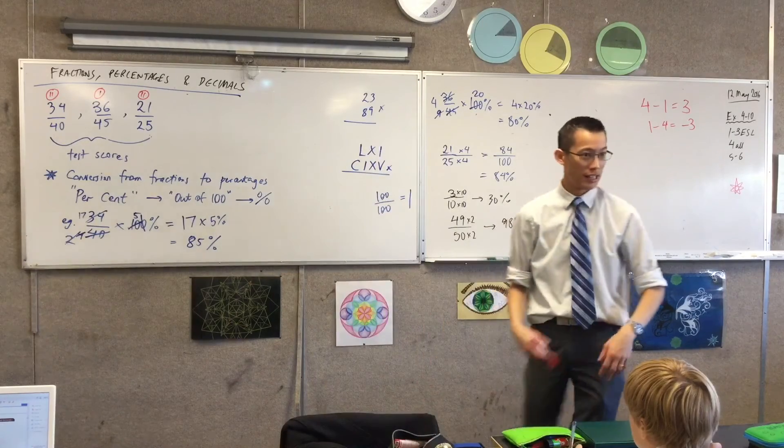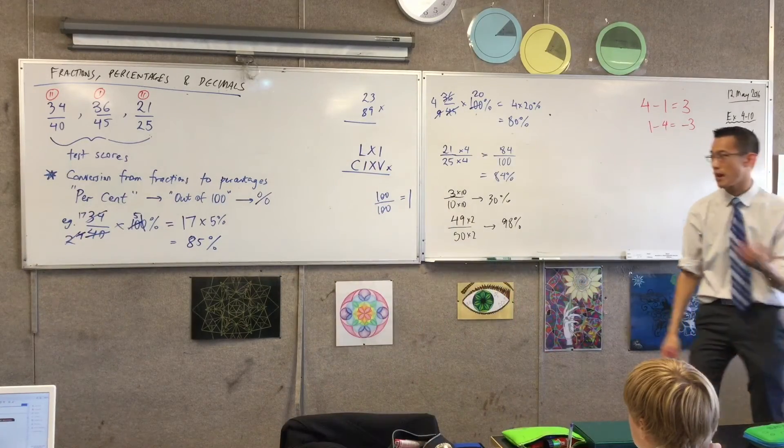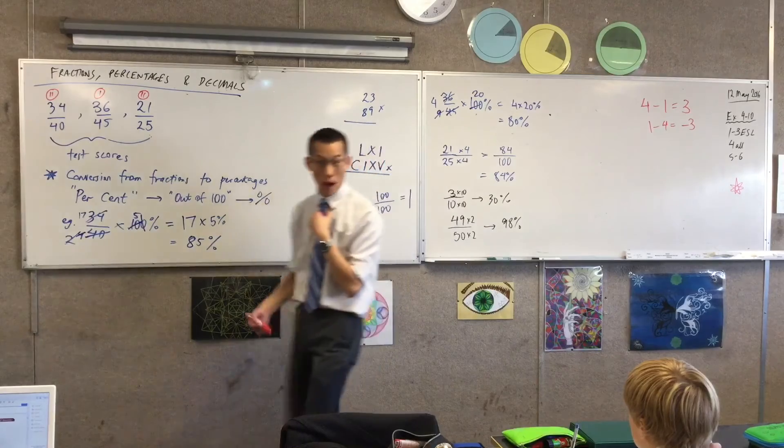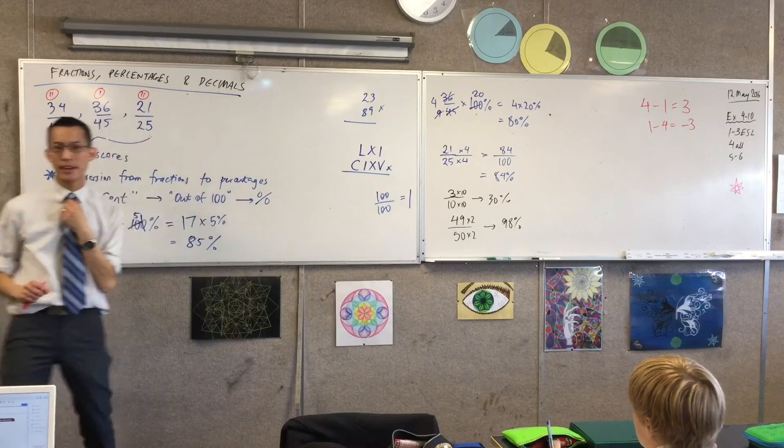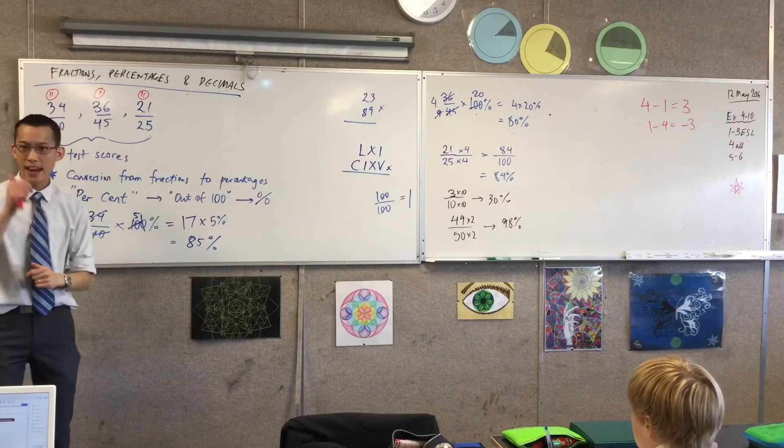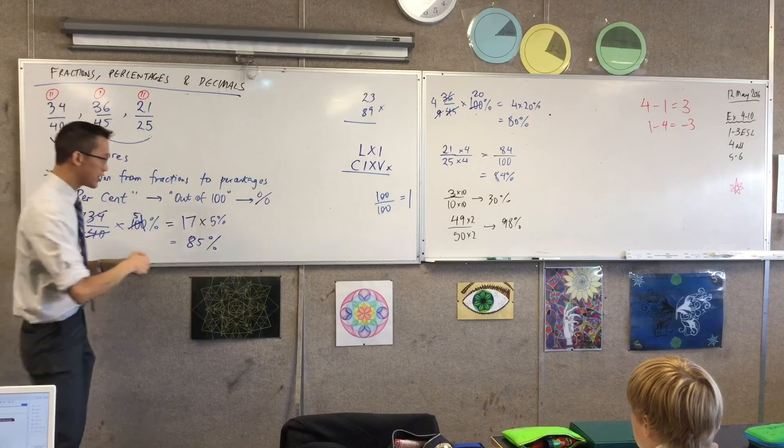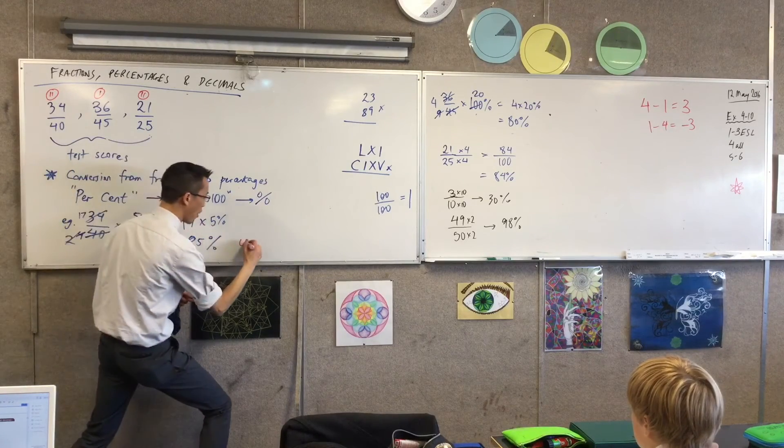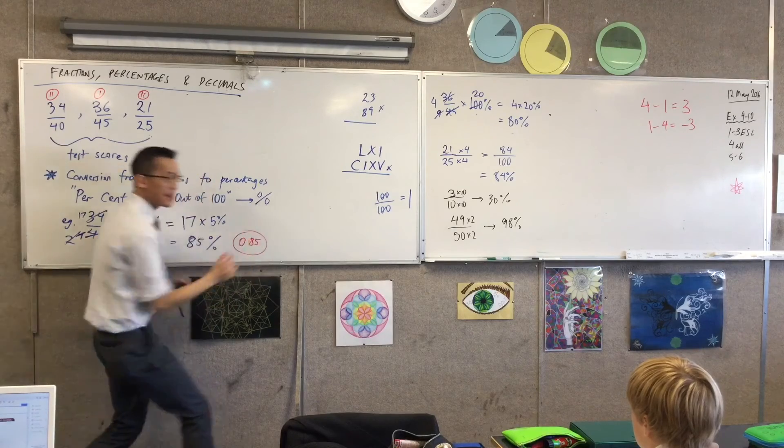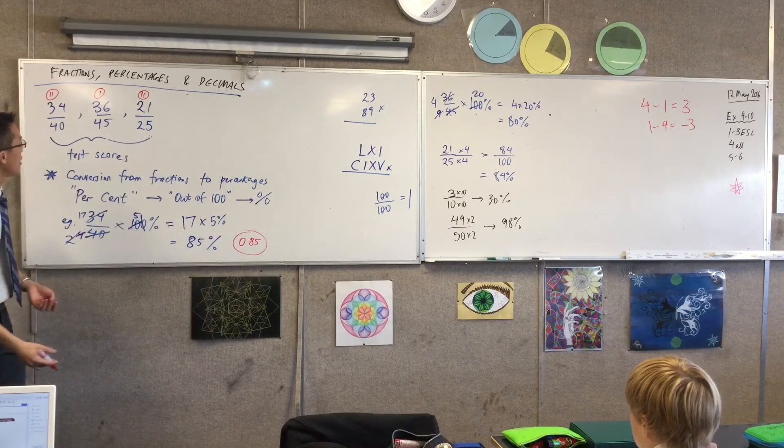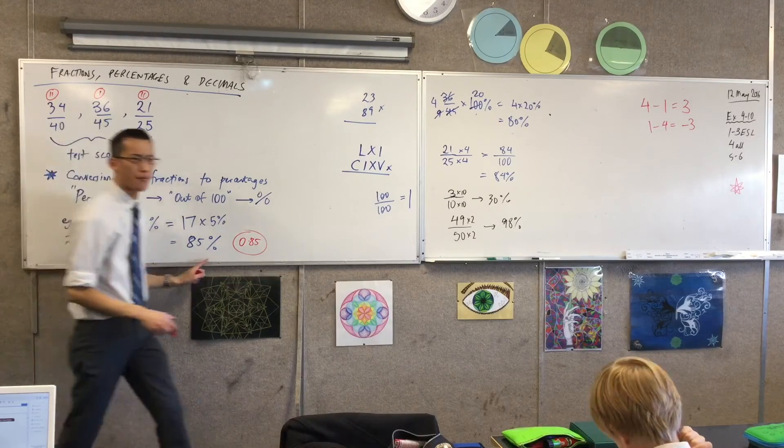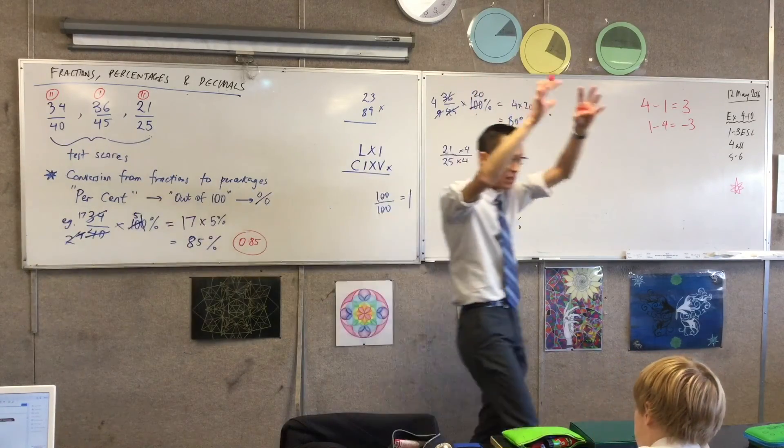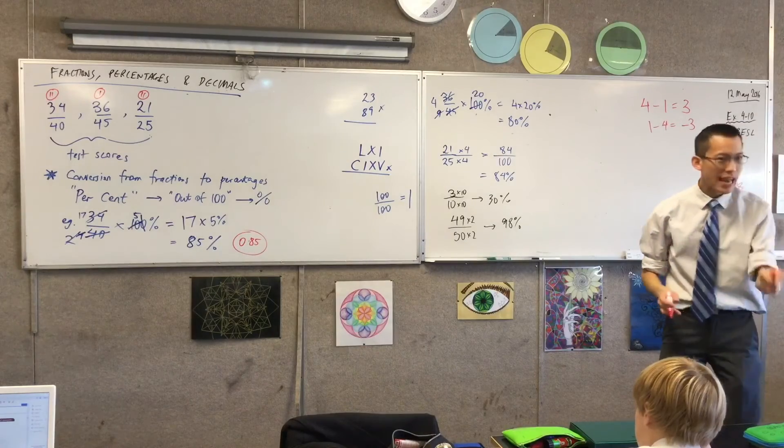If I say, punch in 85% into my calculator, right? 85%, and then I hit equals, it should tell me, 0.85, okay? That's the decimal version. By the way, what number did 85% come from? Like, we started with something else, and then we got to 85%. It started with 34 over 40.